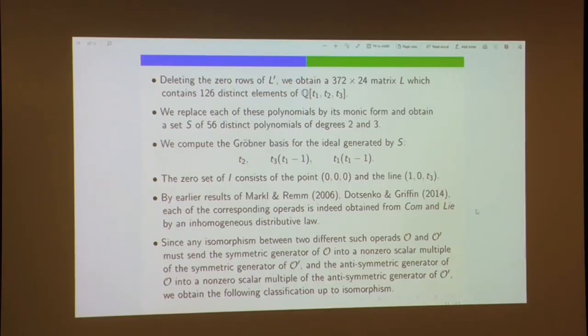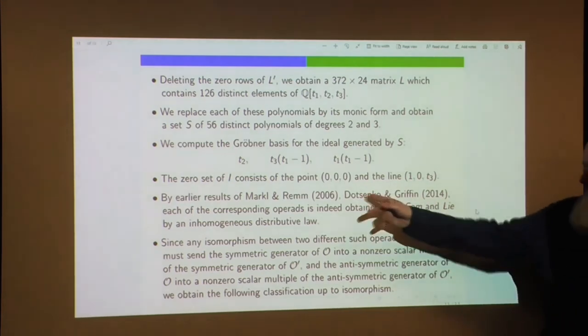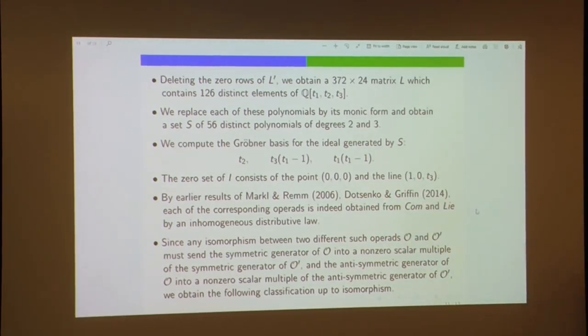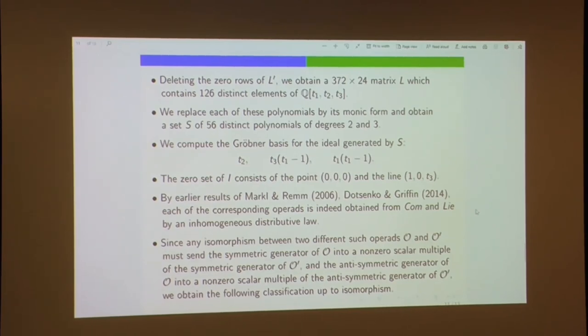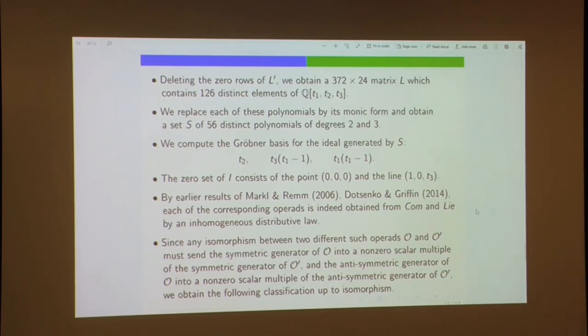We mentioned that having dimension 24 in arity 4 was only a necessary condition, but by some previous work, all of the operads obtained from these parameter values in fact define inhomogeneous distributive laws between the commutative operad and the Lie operad. We also ask whether operads might be isomorphic for different parameter values. The automorphism group is small — the commutative operation must go to a non-zero scalar multiple of itself, and the anti-commutative operation similarly.